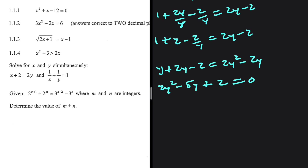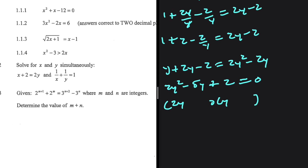We can factorize this without using the quadratic formula. Using factors minus 2 and minus 1, we get 2y squared minus 5y plus 2 equals 0. Solving this, y equals 1/2 or y equals 2.